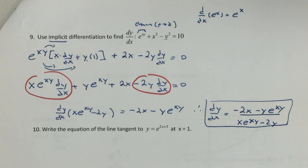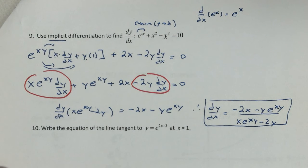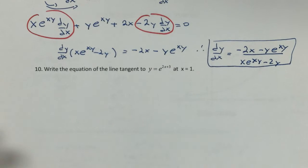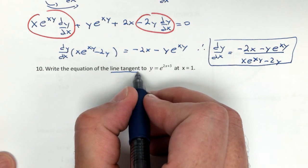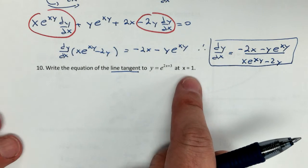All right, number 10. You might be asking yourself, Mr. Werner, this stuff is so easy, but how's it going to help me with my tangent lines? Good question. Let's write the equation of our tangent line at x equals 1.